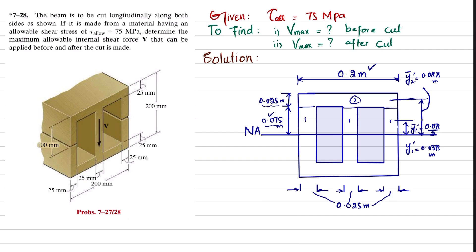Let's start with the solution. As we know, maximum shear stress is equal to V times Q_max divided by I times t. So we'll get V equals tau_max times I times t divided by Q_max. We have maximum shear stress, and we will find I, Q_max, and t.